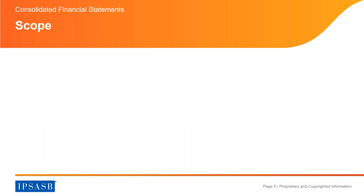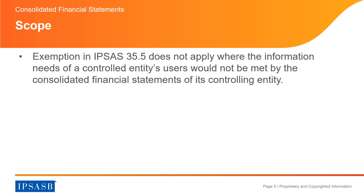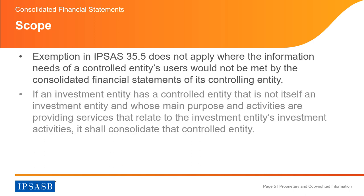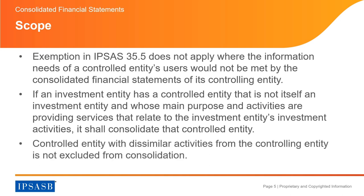There are some important exceptions to the previous decision tree. The first is the exemption in paragraph 5 does not apply where the information needs of a controlled entity's users would not be met by the Consolidated Financial Statements of its controlling entity. The second is that if an investment entity has a controlled entity that is not itself an investment entity, and whose main purpose is providing services related to the investment entity's investment activities, it shall consolidate that controlled entity. The third is that a controlled entity with dissimilar activities is not excluded from consolidation. The fourth is that public sector combinations are excluded from IPSAS 35 and are within the scope of IPSAS 40.